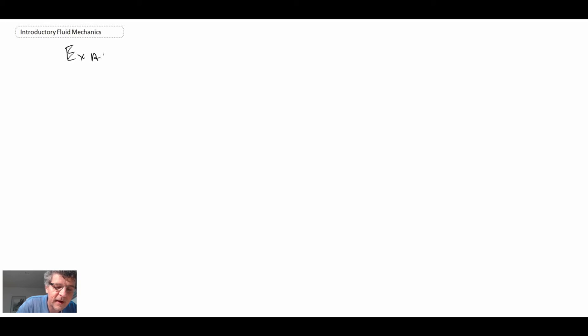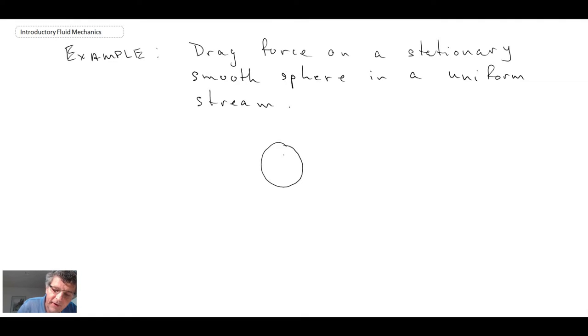So let's look at this as an example. So this is something pretty simple. What we have is we have a sphere, maybe diameter d, and it is in a uniform flow. So we have some uniform flow coming over it. And we'll say the free stream velocity here is v. And we're interested in the drag force on that sphere.